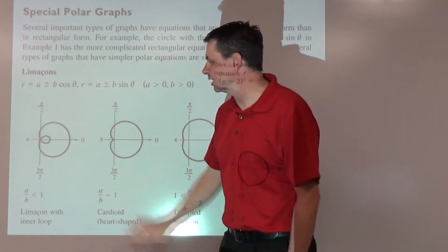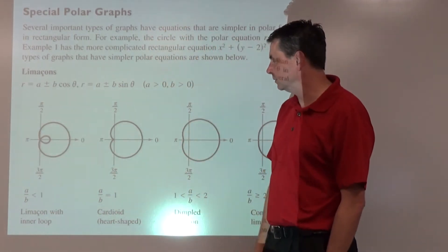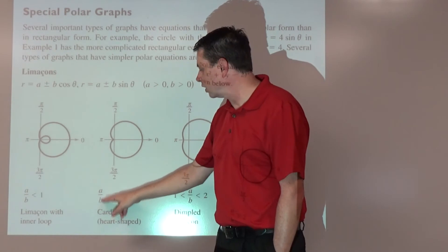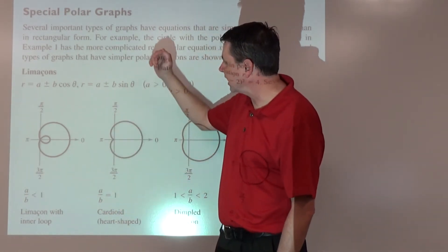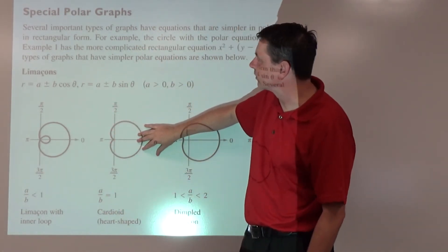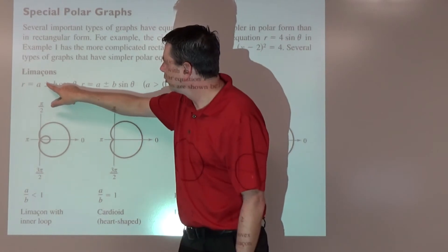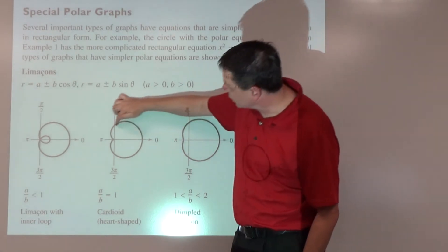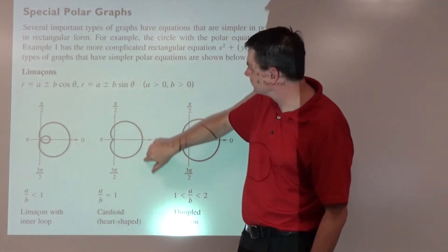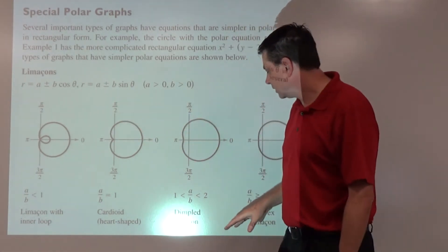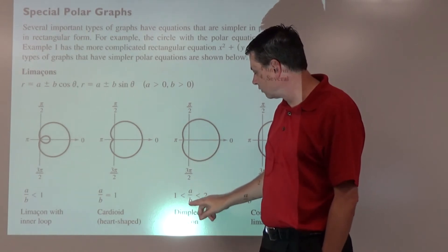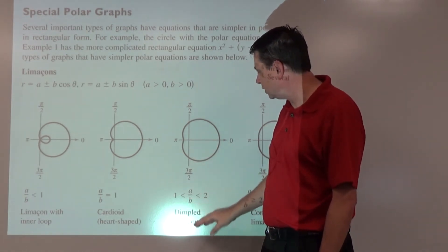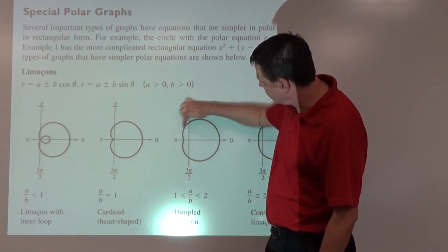We get the limaçon with an inner loop. If those values are equal, so let's say this is the cosine variety, 4 plus 4 cosine theta, you get a cardioid, which looks like a heart.